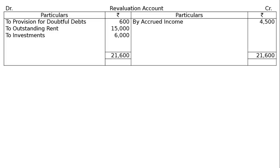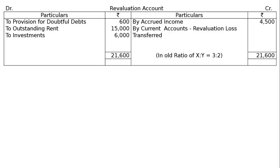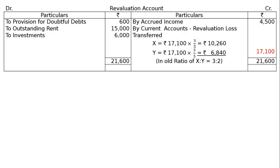Totalling the debit side of the revaluation account and taking it to the credit side: revaluation loss transferred in old ratio of X to Y, that is 3 to 2. The total loss is Rs. 21,600 minus Rs. 4,500, that is Rs. 17,100. X gets 3/5: Rs. 17,100 × 3/5 = Rs. 10,260. Y gets 2/5: Rs. 17,100 × 2/5 = Rs. 6,840.